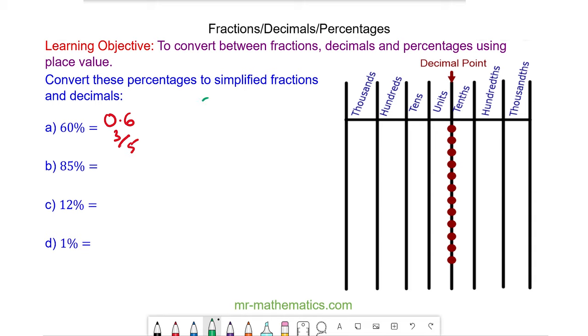For 85 percent, we have 85/100, which is 0 units, 8 tenths and 5 hundredths, so 0.85. And as a simplified fraction we can divide the numerator and denominator by 5. 85 divided by 5 is 17, 100 divided by 5 is 20, and this is our simplified fraction.